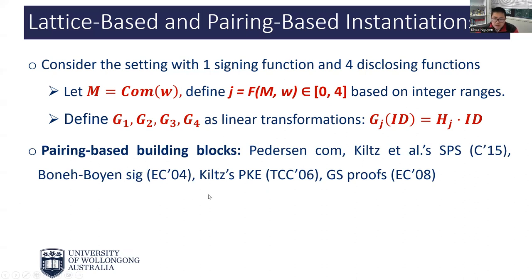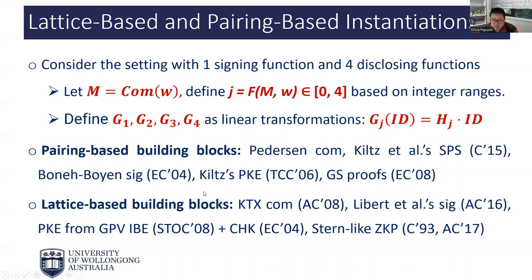Specifically, the pairing-based scheme employs Pedersen commitments, a structure-preserving signature by Kiltz, Désiré, and Sebé, the Boneh-Boyen signature, a CCA-secure IBE by Kiltz, Désiré, and Sebé, and the Groth-Sahai proof system. Meanwhile, the lattice-based scheme uses a signature scheme with efficient protocols by Libert et al., a CCA-secure PKE obtained from the GPV-IBE and the CHK transformation, and Stern-like zero-knowledge argument systems.